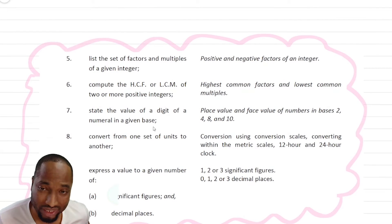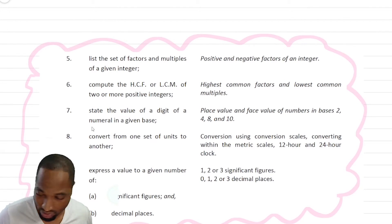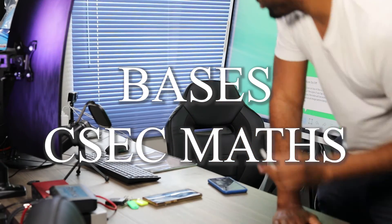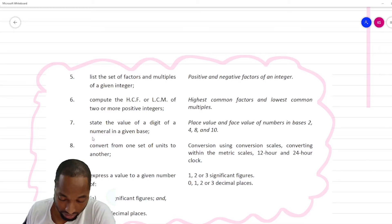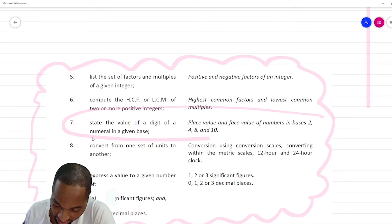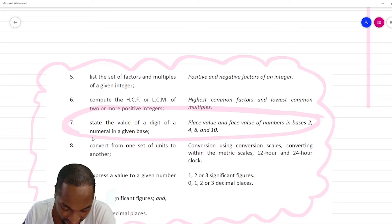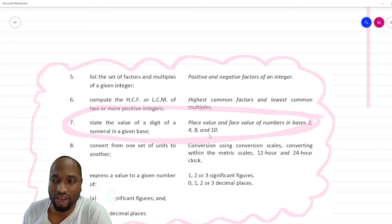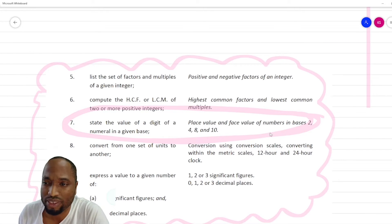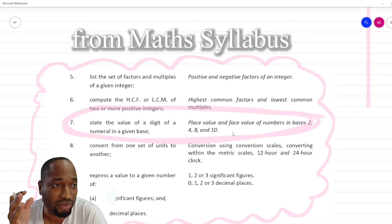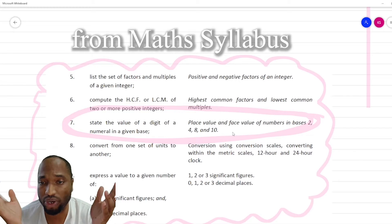But theoretically they can get tougher questions than this based on what we have in the syllabus. This is what is in the syllabus. The first topic: numeracy computation, topic number seven — state the value of a digit of a numeral in a given base, place value and face value of numbers in bases. It's kind of ambiguous, not really clear what you're working with or what the limits are.